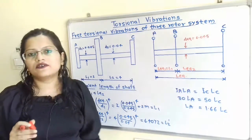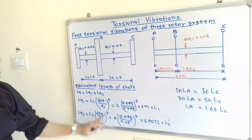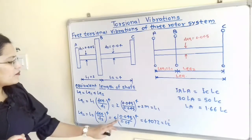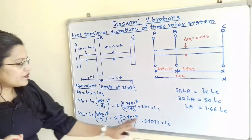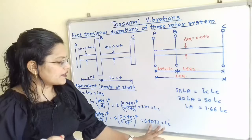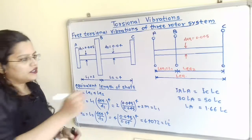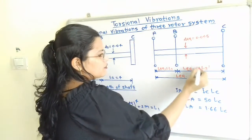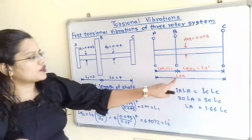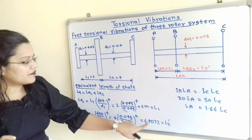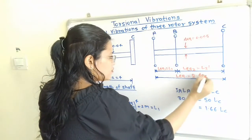We calculate L equivalent 2 using the formula L2 × (D_equivalent / D2)⁴. Here L2 is 4, multiplied by (0.045 / 0.04)⁴, giving 6.4072, which is not equal to L2. So we write this as L2 dash. The total equivalent length is L_eq1 + L_eq2 = 2 + 6.4072 = 8.4072 meter.